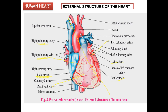Blue color indicates deoxygenated blood, and red indicates oxygenated blood. The heart is divided into four chambers: right atrium, left atrium, right ventricle, and left ventricle.